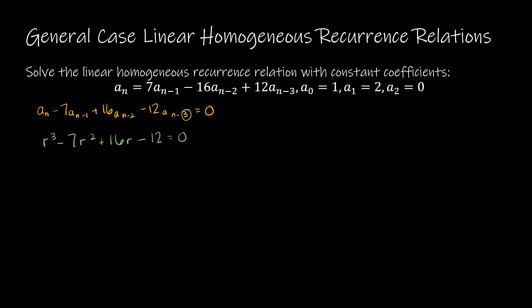We can use the P/Q rule. Factoring by grouping won't work here. The P/Q rule says: find the factors of P, the constant term, and the factors of Q, the leading coefficient. So the possible factors of P = 12 are ±1, ±2, ±3, ±4, ±6, and ±12. And Q, thankfully, only has ±1 as factors.